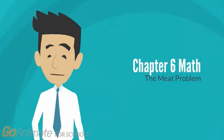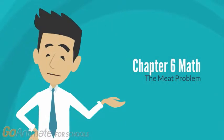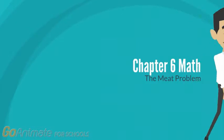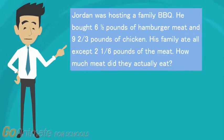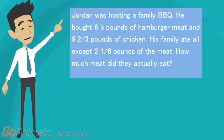Chapter 6: The Meat Problem. So Jordan's family eats like a ton of food. There are a lot of numbers and fractions here. How much meat does the family have?